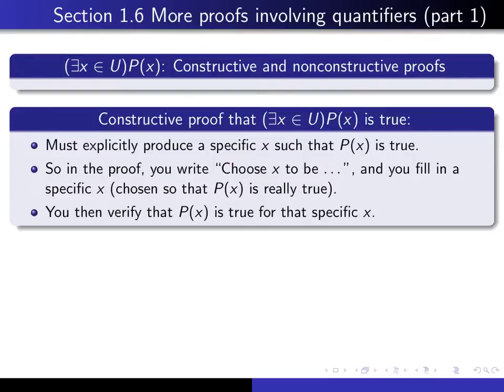choose x to be... and then you're going to fill in a very specific x, presumably chosen so that P(x) turns out to be true. You then verify that P(x) is true for that specific x. If you can do that, then you've completed the proof.